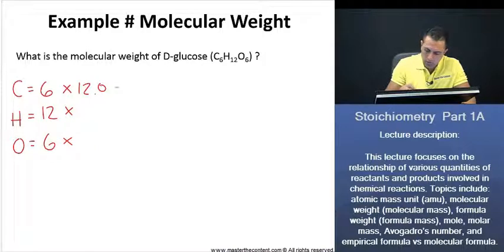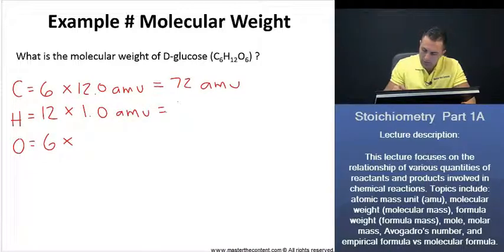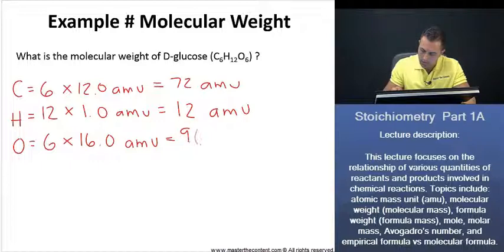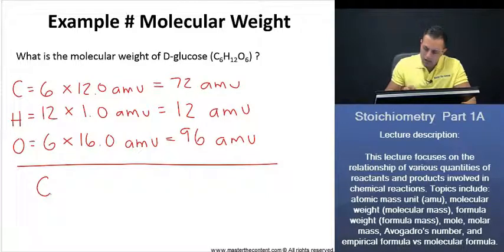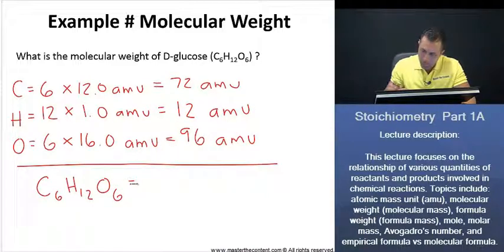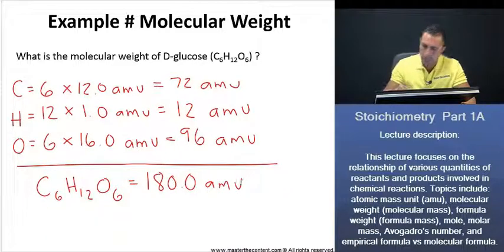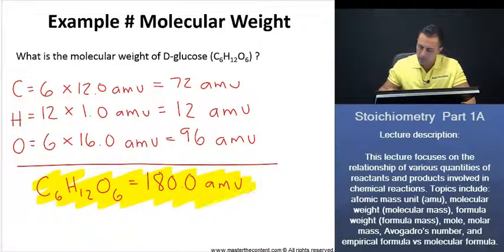Great. Coming back to our slide here, thus, we said that that was going to be 12.0 atomic mass units. And that's going to give us a value of 72 atomic mass units. Now, we said it was going to be one atomic mass unit for hydrogen. Thus, that's going to give us 12 atomic mass units. And for oxygen here, it's going to be 16 atomic mass units. And that's going to give us a value of 96 atomic mass units. Wonderful. And once we go ahead and we equate this, again, it is for glucose that we need the molecular weight. That is just going to be 180 atomic mass units. And there we are. That is how you would get the molecular weight.